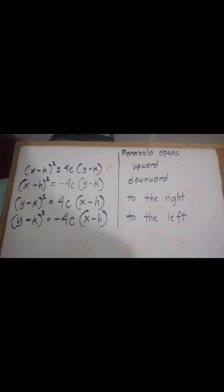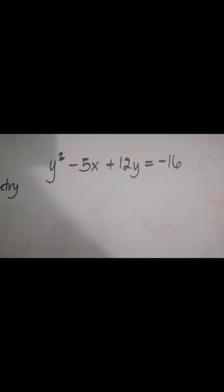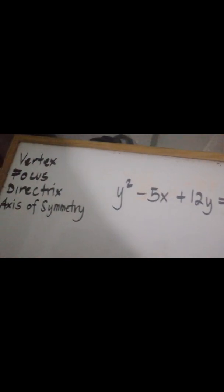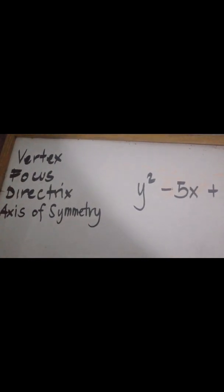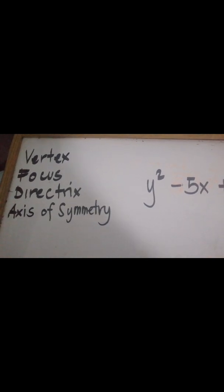I hope you take notes of those important details. Let's start solving. We have the equation y squared minus 5x plus 12y is equal to negative 16. Our goal here is to transform this equation into its standard form. We also need to find the vertex, focus, directrix, and axis of symmetry.